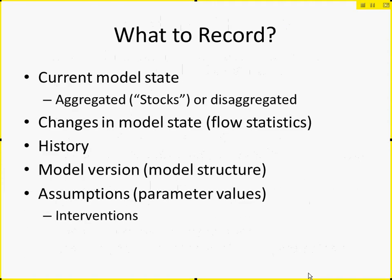In terms of what to record: the first and most obvious thing is an aspect of model state — what's the current state of the system — whether aggregated stocks or disaggregated states of each agent, values of state chart states, stocks and flows, variables or parameters. Another very common need is to capture changes in model state over time. Within a system dynamics model we'd look to flows; within an agent-based model we look at variables we might compute manually.